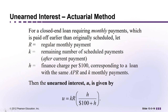H is the finance charge per $100 corresponding to a loan with the same APR and K monthly payments. Notice that H here is not the original H for the whole loan — it's as if you borrowed the remaining money for the last few payments. That interest amount is what you get back. The formula for unearned interest is: U = K × R × H ÷ (100 + H).